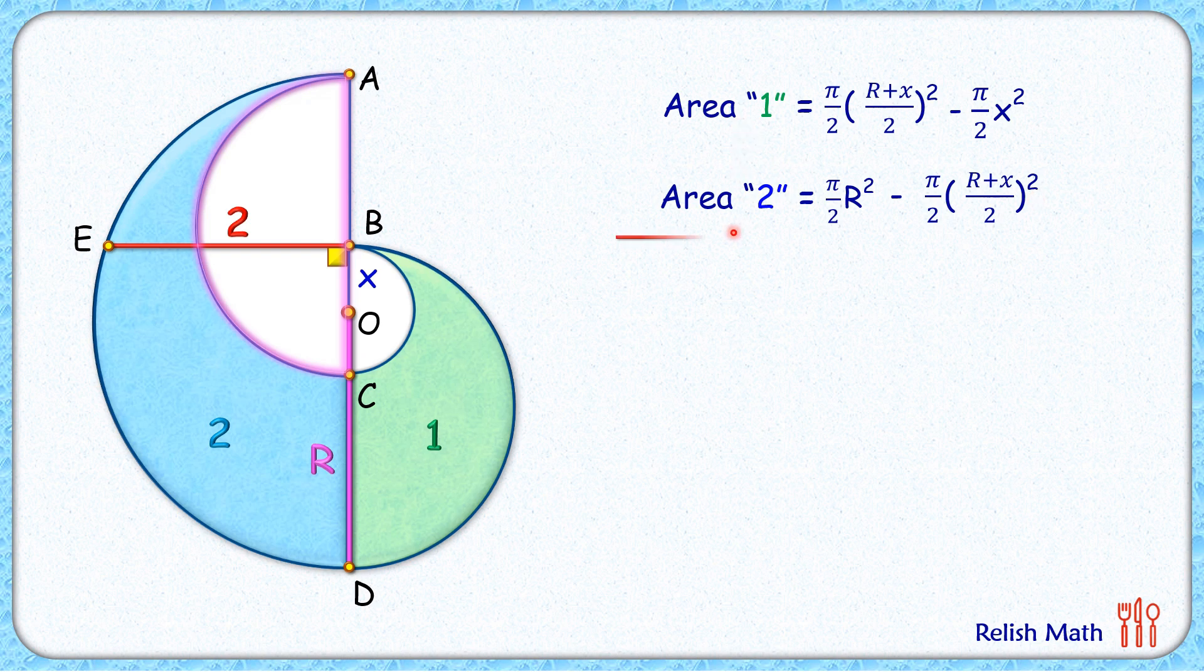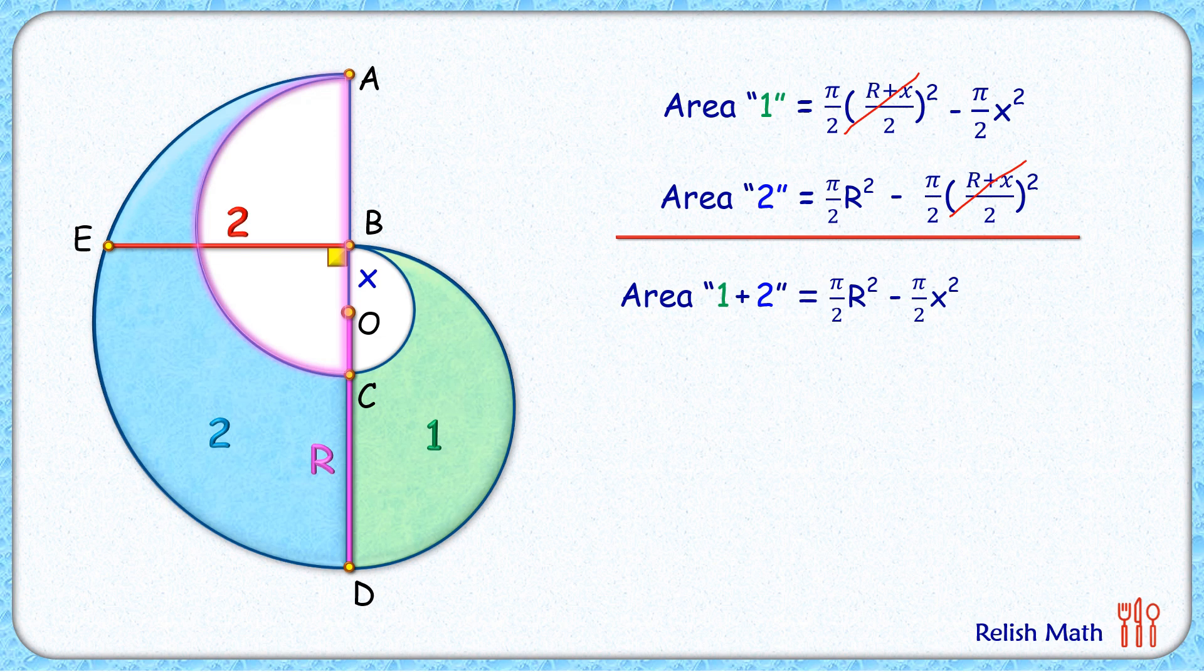Now if we add these 2 regions we'll get our full blue region. So area 1 plus 2, when we are adding it we'll see that these 2 terms will get cancelled down. So it will be π/2 times r squared minus π/2 x squared. Let's take π/2 common here. So it will be π/2 times (r² - x²).